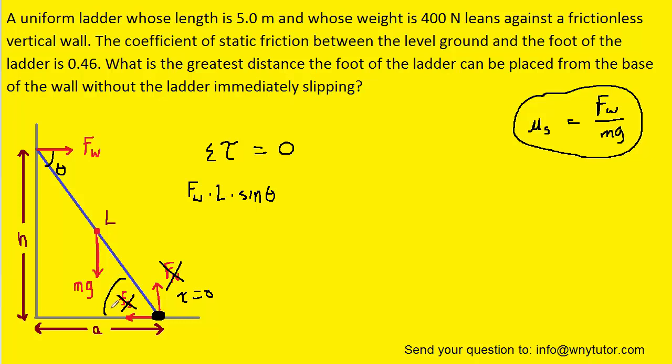The sine of that angle would equal the opposite side, H, over the hypotenuse, L. So we can actually replace the sine of the angle with H over L. And then, of course, the L's would cancel.